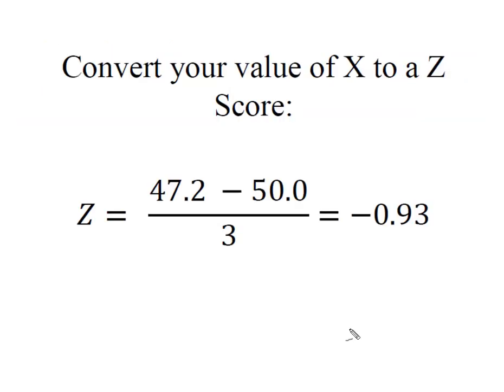The first thing we've got to do is convert that value of x to a z-score. We do that by taking 47.2 minus the mean of 50 divided by the standard deviation. This formula is x minus μ divided by the standard deviation, which gives us a z-score of negative 0.93.